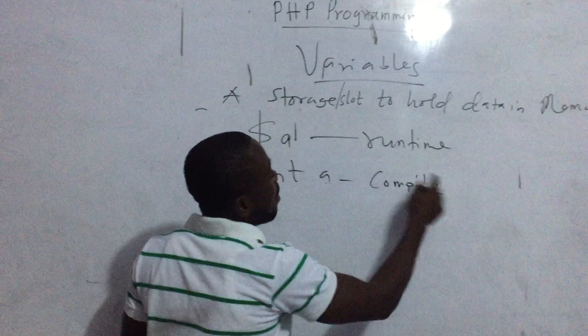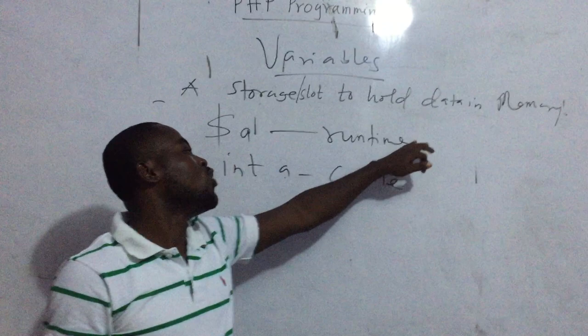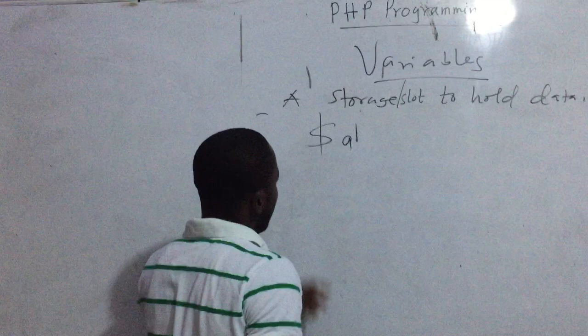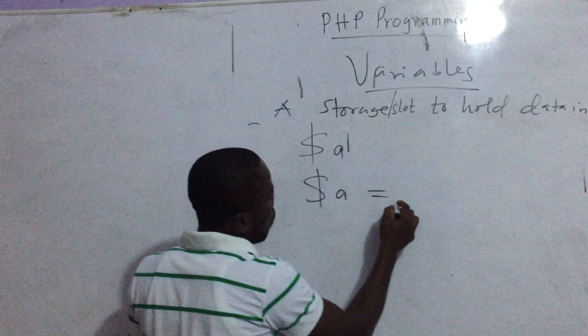With interpreter languages or dynamic languages, we don't know the type until runtime. To declare A as a variable, we prepend the dollar sign in front of the variable name. So we write $a = 2, and all PHP statements are terminated with a semicolon.